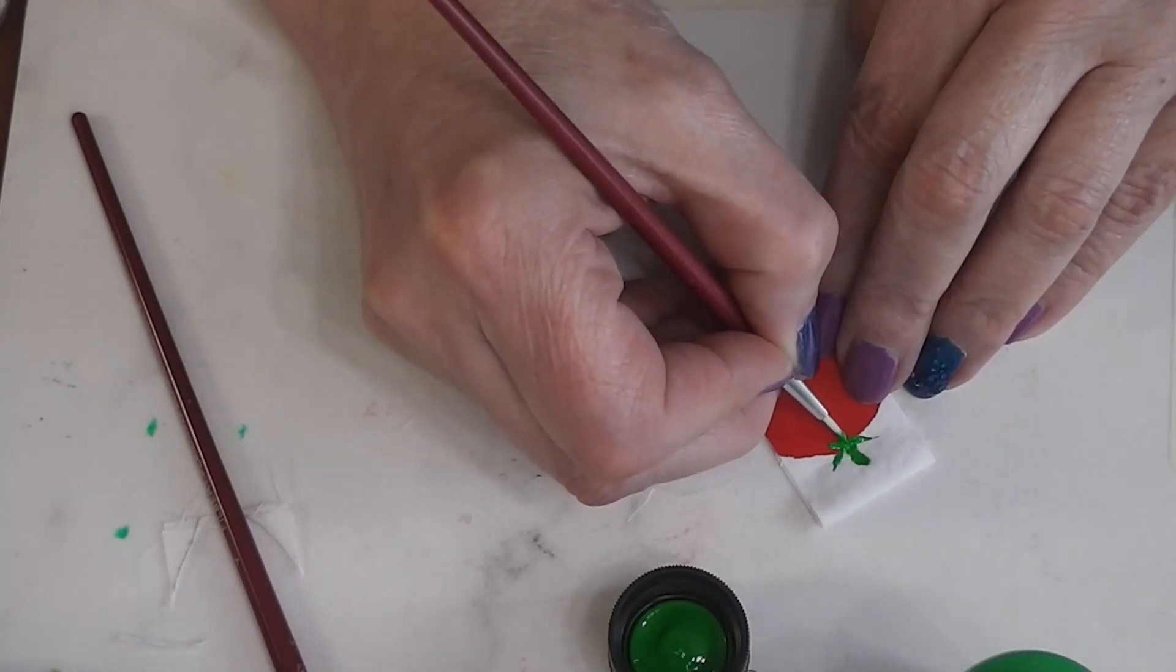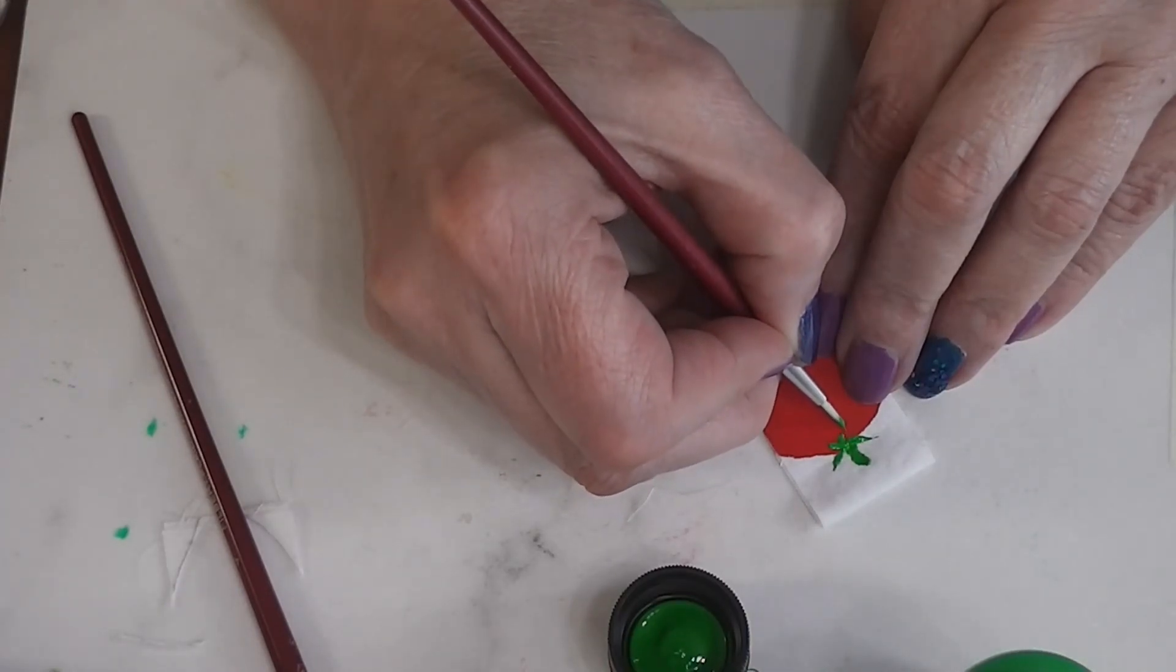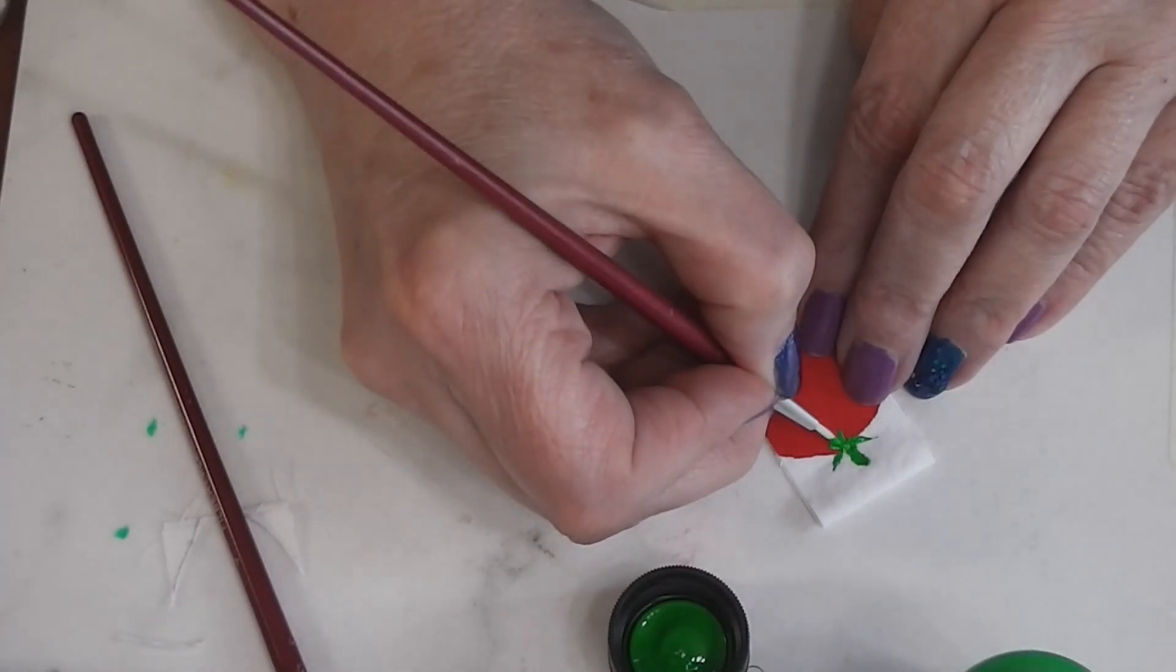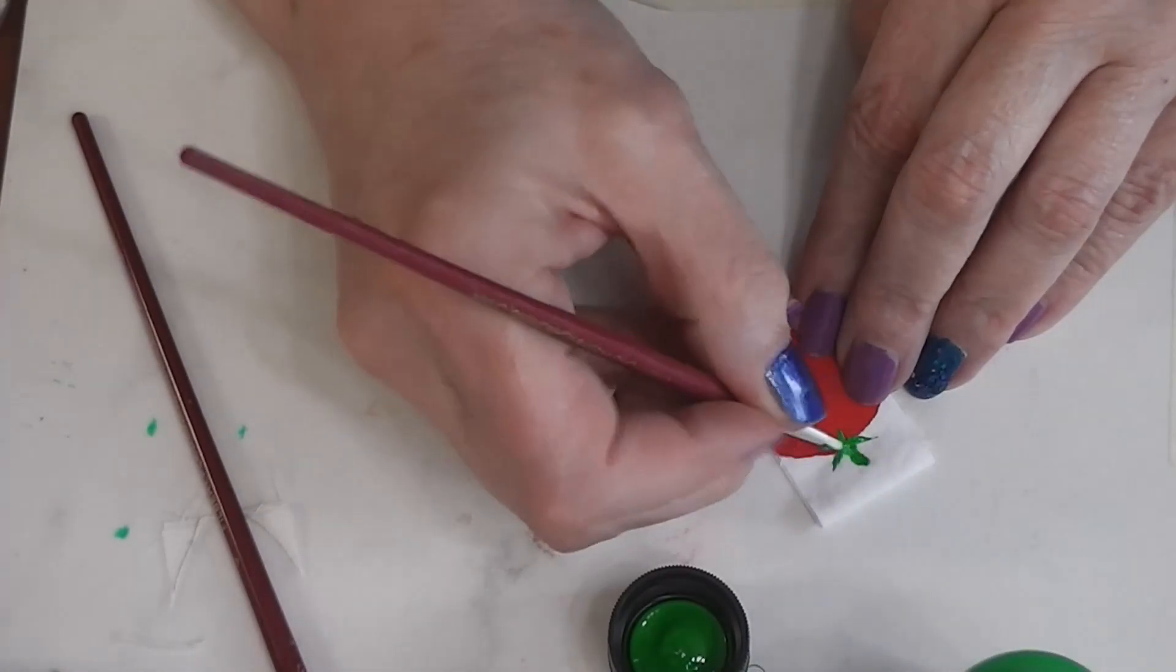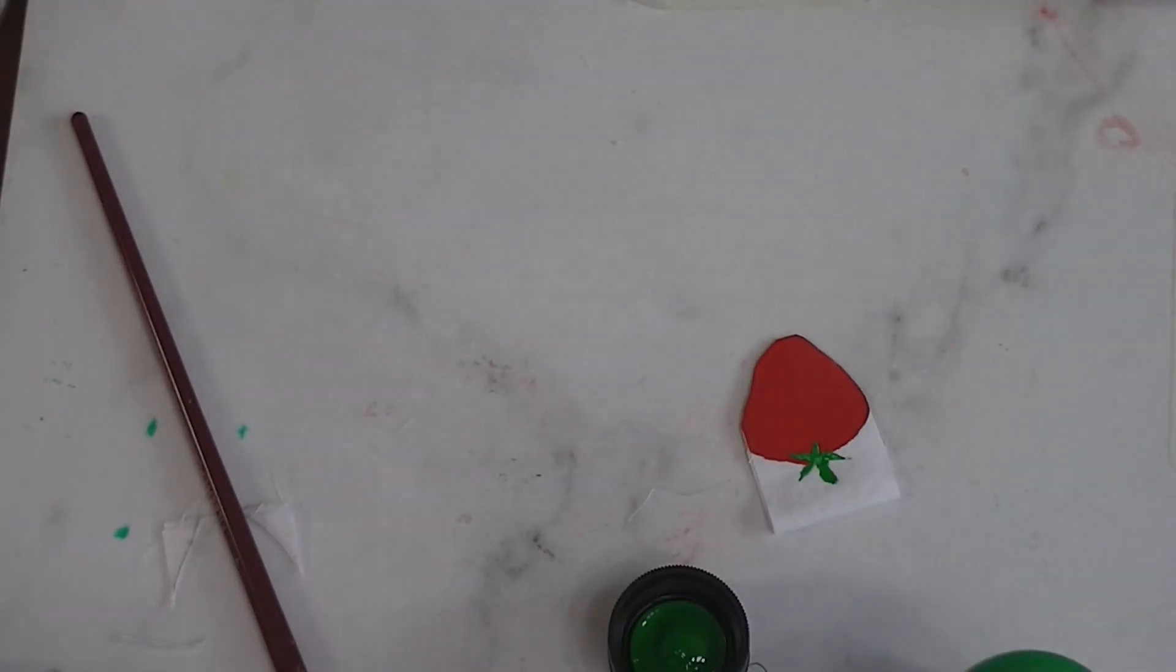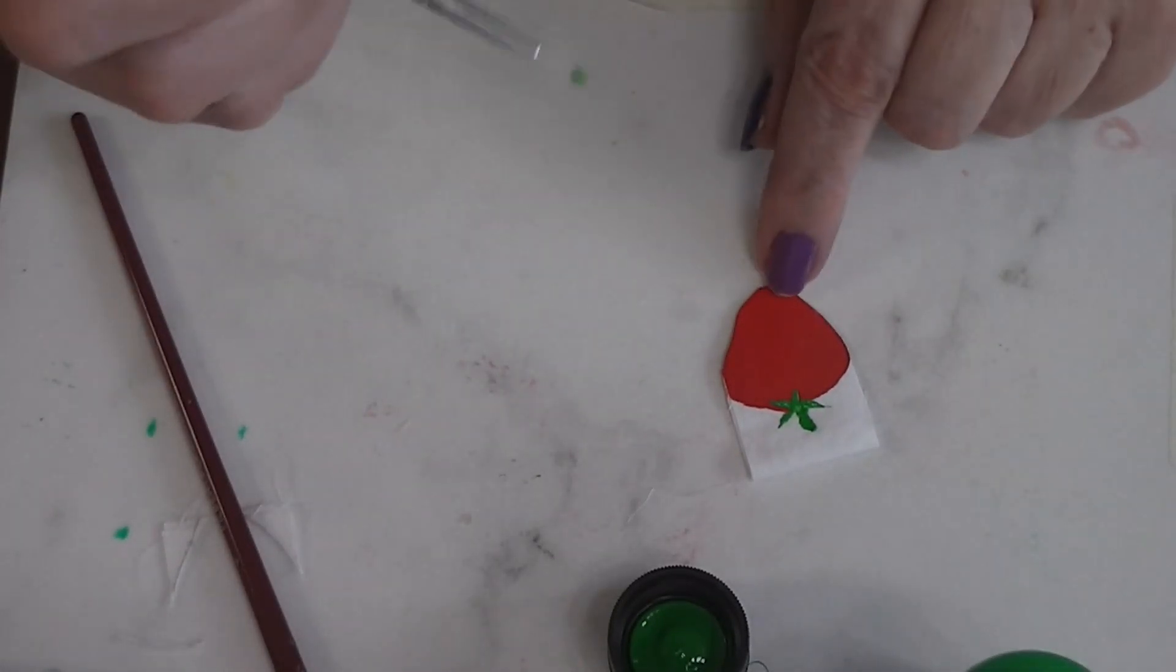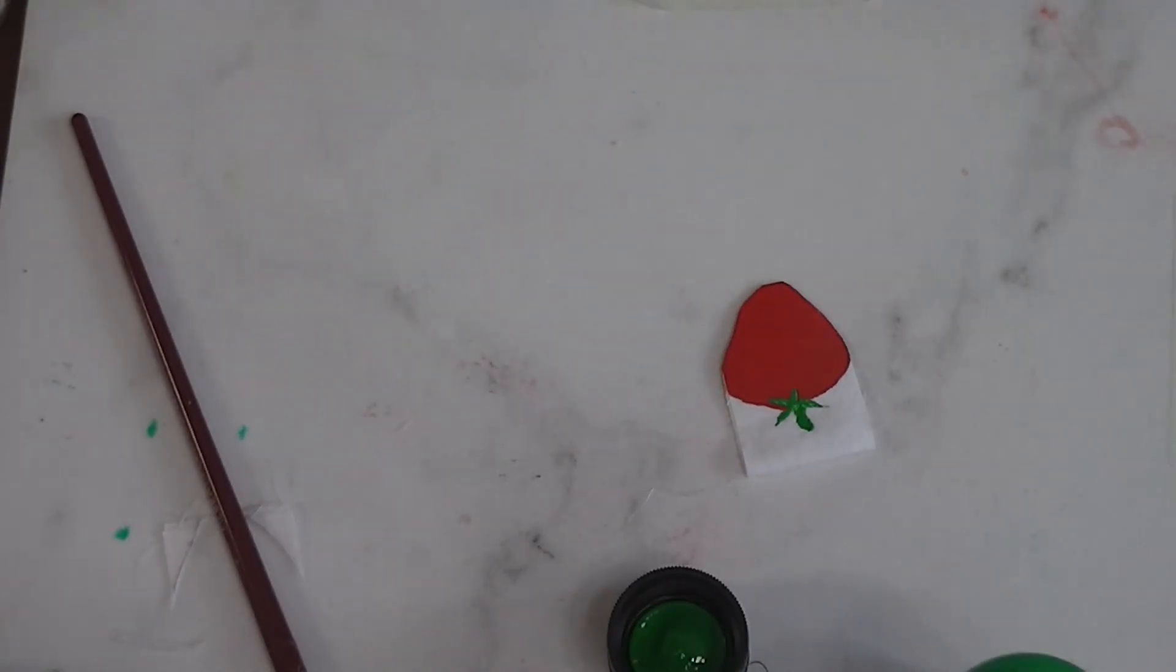I'm not talking because I'm trying to concentrate. I think I'm happy with that. So we're going to let this dry. I'll probably do a second coat on this green. Then when this is all dry on this side, I'll flip the flag over. I'll do the same lines on the other side. And when that paint is dry, I'll come back and we'll put some seeds on our strawberry.